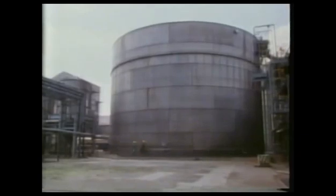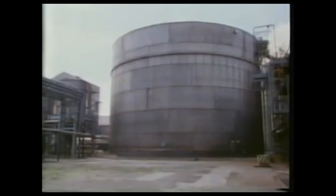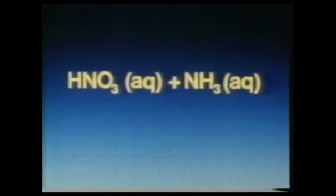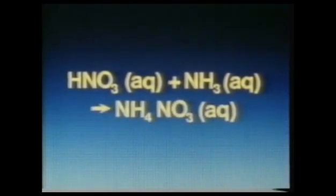The nitric acid produced is stored in huge stainless steel tanks. Some of it is sold; most is converted here into useful products. Nitric acid can be neutralised by ammonia, a base, to produce the salt ammonium nitrate in solution.